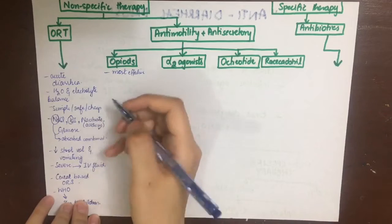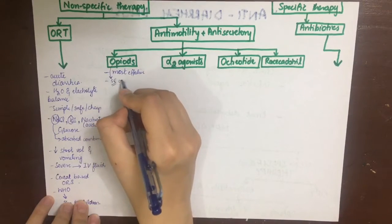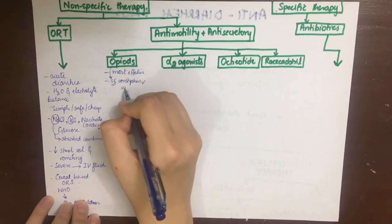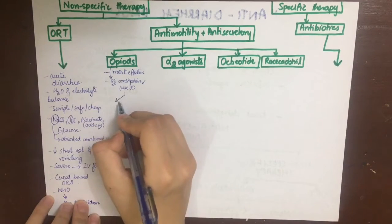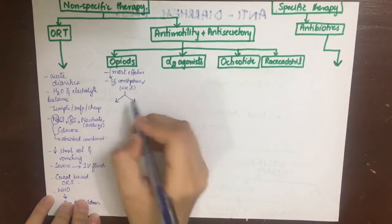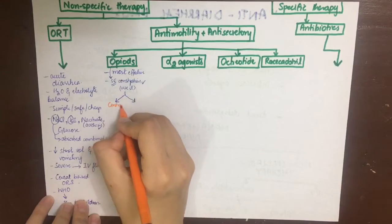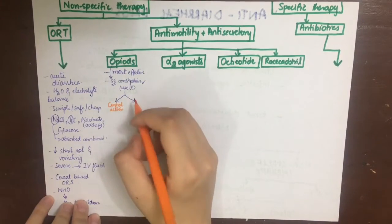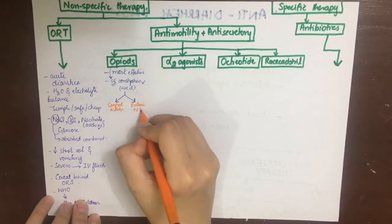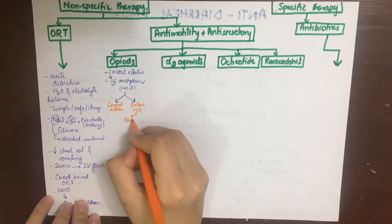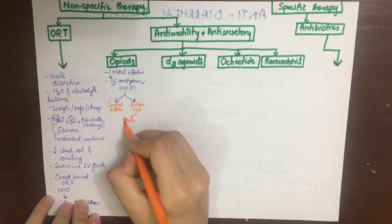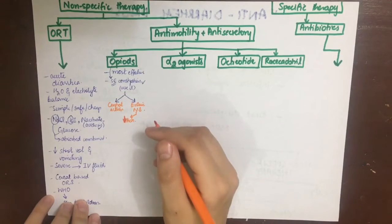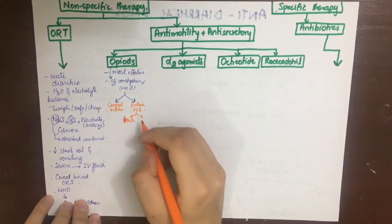The first drugs we can use as anti-motility and anti-secretory agents are opioids — they are the most effective prescription drugs for chronic diarrhea. If you remember from the opioid analgesics topic, one of the chief side effects of opioid analgesics was constipation, so we use that effect here. One drawback is their addiction potential. Opioids have two actions: one central and the other in the enteric nervous system.